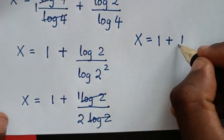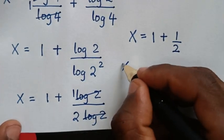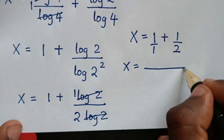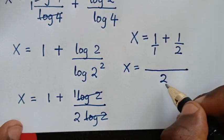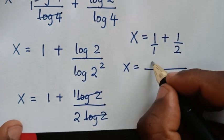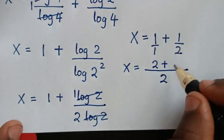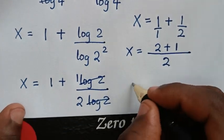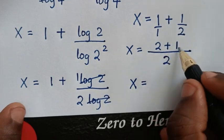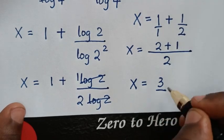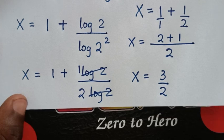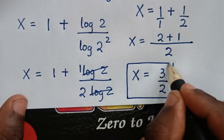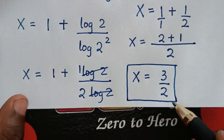So x is equal to 1 plus 1 over 2. Finding the common denominator of 2, we get 2 over 2 plus 1 over 2, which is 2 plus 1 over 2, giving 3 over 2. So the final answer for the value of x in this problem is x is equal to 3 over 2.